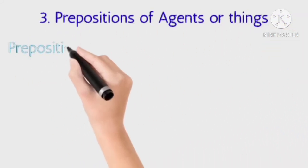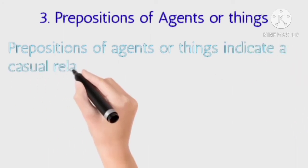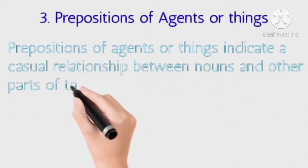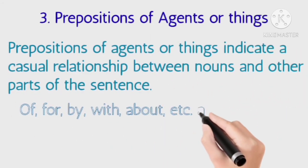Third one is prepositions of agents or things. Prepositions of agents or things indicate a causal relationship between nouns and other parts of sentence.